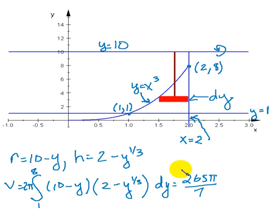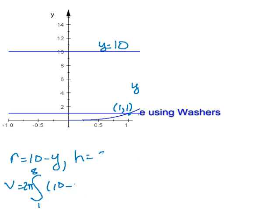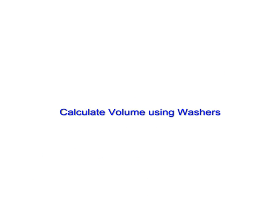Integrate the thing. I think I used Mupad to do it and looks like we get 265 pi over 7.